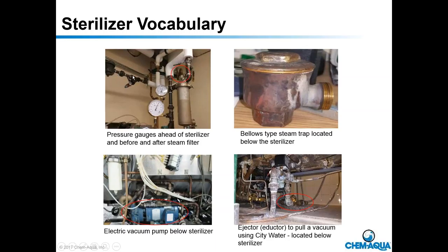Before steam gets into the sterilizer directly below, there's a small impulse trap — a temperature-sensitive steam trap — right on the end of this filter to remove the final water. A very important steam trap is the bellows tap trap located below the sterilizer. It's the only trap the sterilizer actually has. If it fails, that one sterilizer fails, but if all sterilizers fail, it obviously won't be this trap.